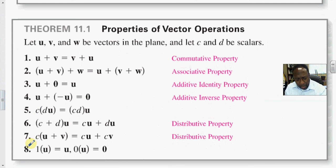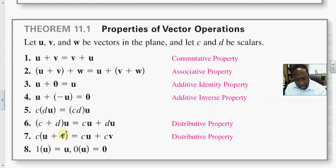Properties 5 through 8 deal with scalar multiplication. Property 5 is the associative property with respect to scalars. Properties 6 and 7 are the distributive properties — distributing a scalar onto a vector, and distributing a vector onto a scalar. Property 8 is most profound: multiplying 1 times a vector, the vector maintains all its properties. And 0 times a vector causes the vector to vanish into the so-called kernel.